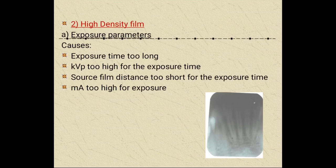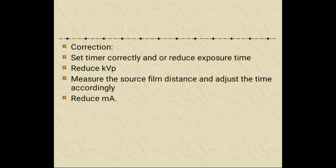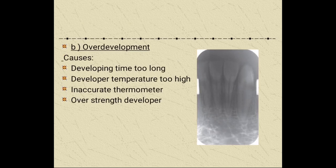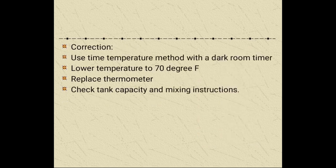A high density film is caused by exposure time being too long, kVp too high for the exposure time, or source-film distance too short for the exposure time. Correction involves setting the timer correctly or reducing exposure time, reducing kVp, measuring the source-film distance and adjusting accordingly, and reducing milliampere. Over-development is caused by developing time too long, developer temperature too high, inaccurate thermometer, or over-strength developer. Correct by using the time-temperature method with a darkroom timer, lowering temperature to 70 degrees Fahrenheit, replacing the thermometer, and checking tank capacity and mixing instructions.